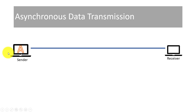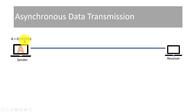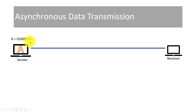Let's say that the sender has a letter 'A' that it will send and the receiver will receive it. Normally, the computer will represent 'A' because all computers are digital computers and all data will be represented in the form of binary digits and bits.